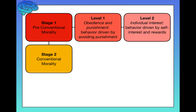Now we get to Stage 2: conventional morality. Most people fall in Stage 2 — most people are right here. We've talked about pre-conventional morality, and what comes next after conventional morality would be post-conventional. But first, let me tell you about the two levels within conventional morality.